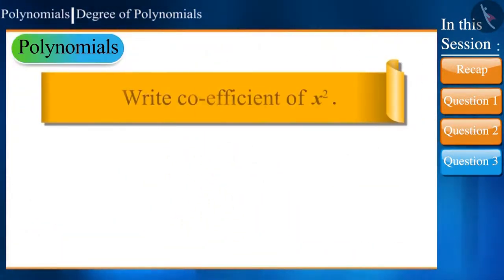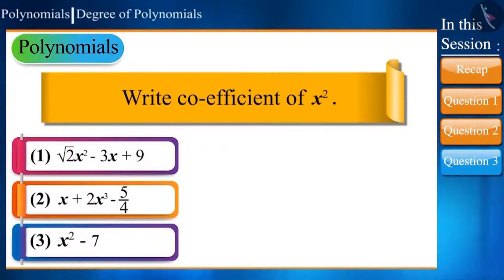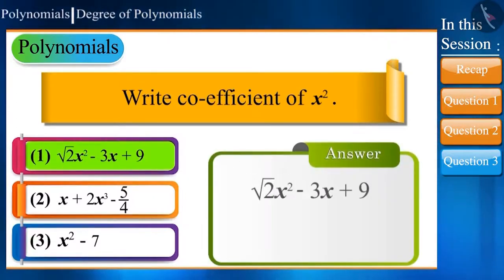You have to write the coefficient of x² in the given polynomials. Such questions are quite easy—we just have to focus on x² and write its coefficient. In the first polynomial, √2x² - 3x + 9, what is the coefficient of x²? We can directly say √2 is the answer.